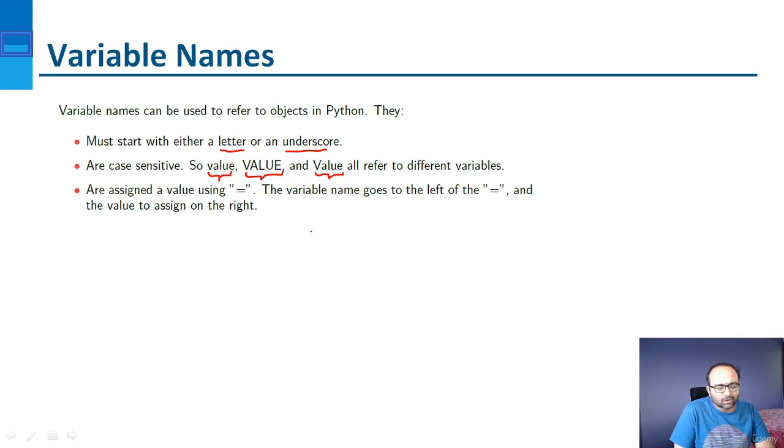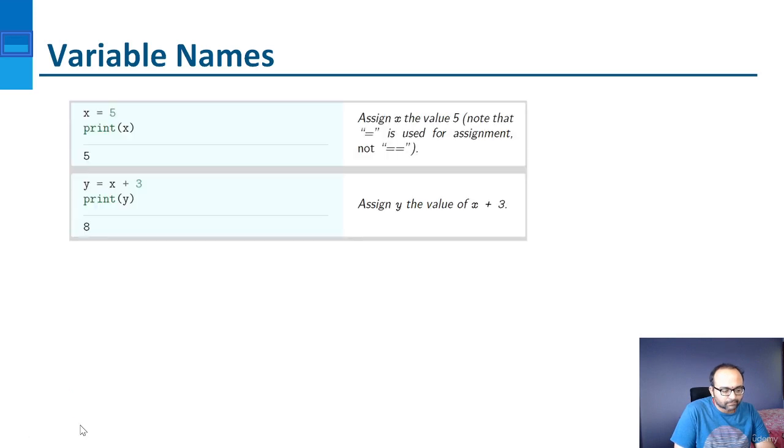Also, variable name value written with uppercase and lowercase letters - all these three are different. How do we assign a variable a corresponding value? For example, a equals 100. So a is a variable and you are assigning a value called 100 to a with the help of the assignment operator.